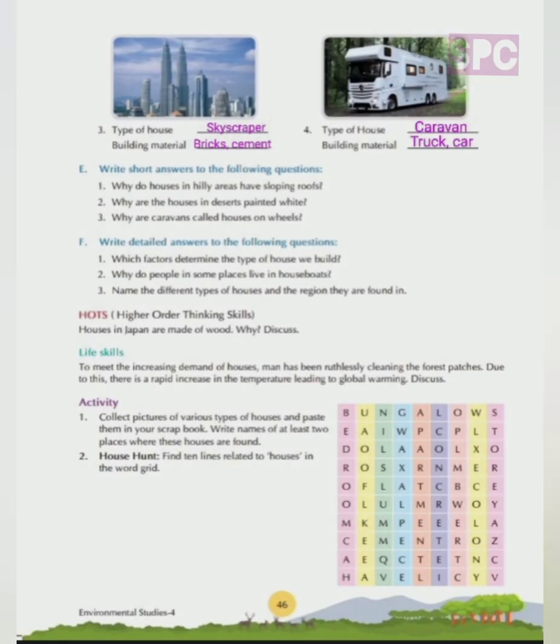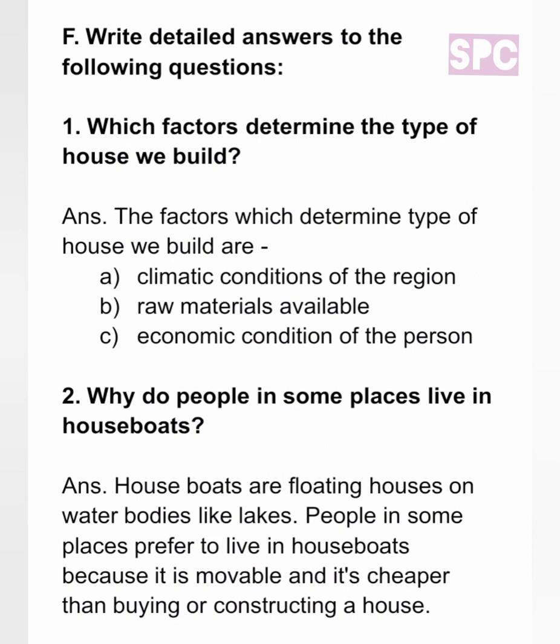Question F: Detailed answers. Question 1: Which factors determine the type of house we build? The factors are: A, climatic conditions of the region — whether the place is hot, cold or receives a lot of rainfall; B, raw materials available, like stones, timber, etc.; C, economic condition of the person — how much a person can spend on the construction of the house.